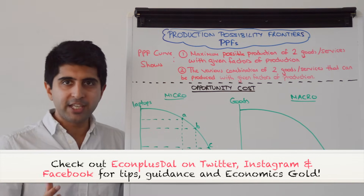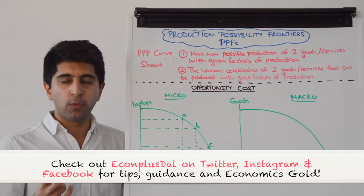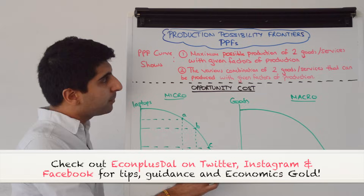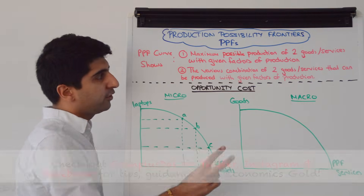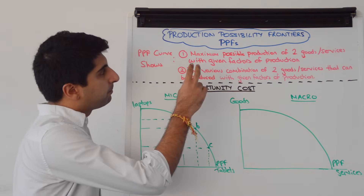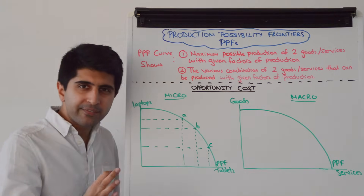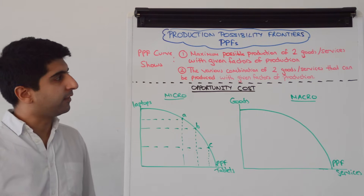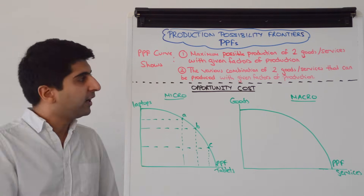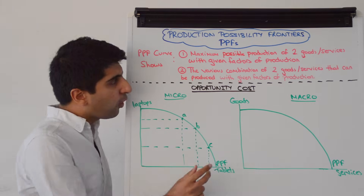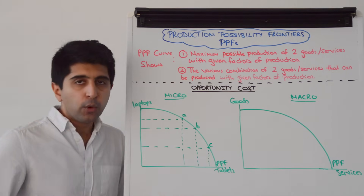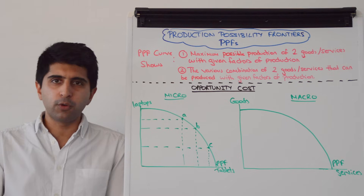What does the curve or the frontier actually show? On a micro level it shows us two things: the maximum possible production of two goods or services that can be produced with a given level of factors of production, but it also tells us the various combinations of two goods and services that can be produced with a given level of factors of production.